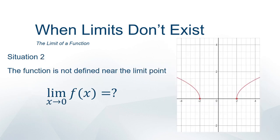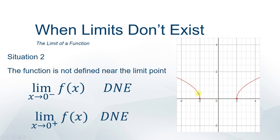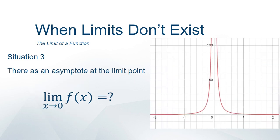Another situation is that we just can't get close to the point in question. Looking at this function, we want the limit as x goes to 0, but we can't really get close to 0 — we can't get any closer than negative 2. As x gets closer and closer to 0, the y values don't get closer to anything. The individual left and right-hand limits don't exist, so the overall limit does not exist.